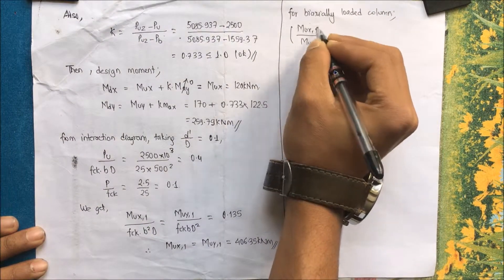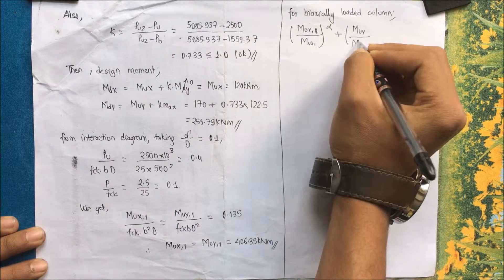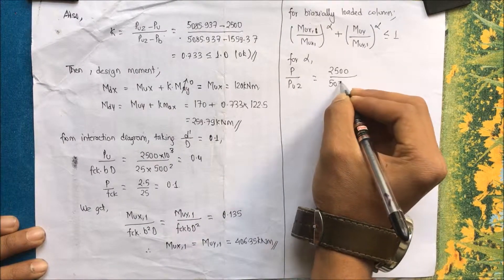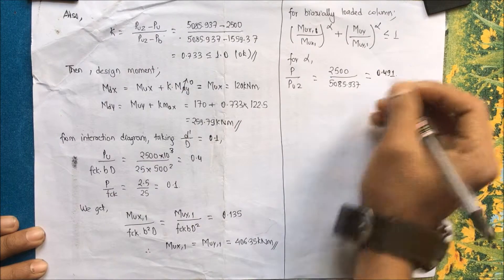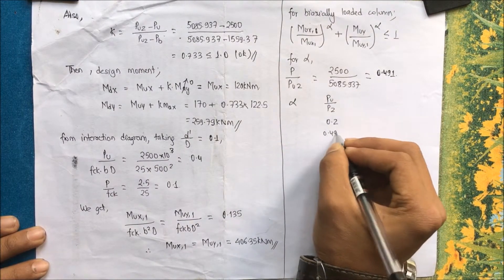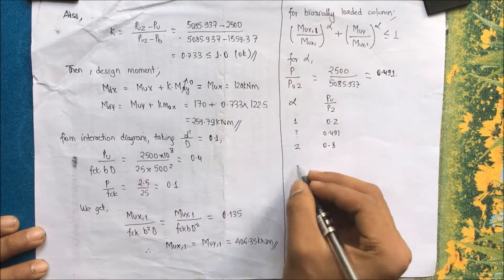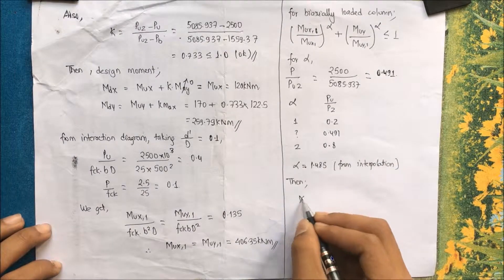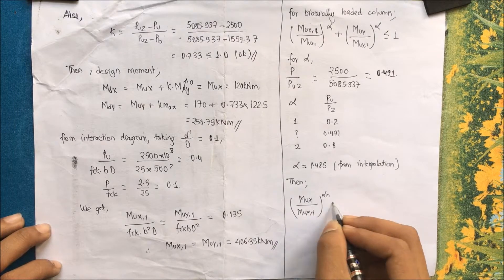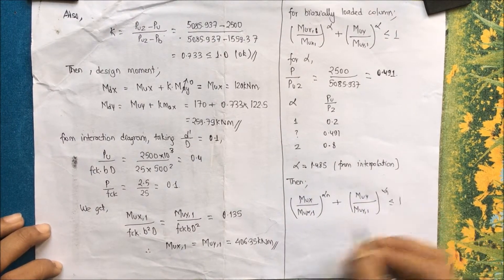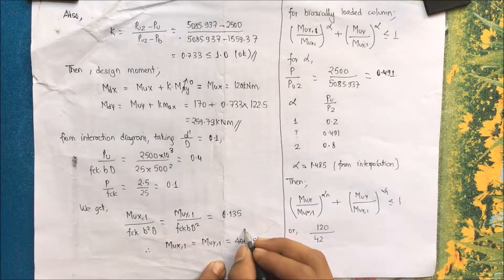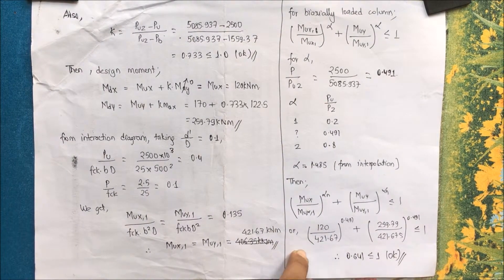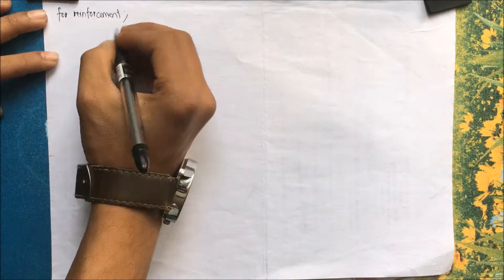For biaxially loaded columns, the condition (Mdx / Mux1)^αn + (Mdy / Muy1)^αn ≤ 1 must be satisfied. The ratio Pu / Puz = 2500 / 5085.937 = 0.491. From the code, αn ranges from 1 to 2 for Pu/Puz between 0.2 and 0.8; by interpolation αn = 1.485. Substituting: (120 / 406.35)^1.485 + (259.79 / 406.35)^1.485 = 0.641 ≤ 1. Condition satisfied.